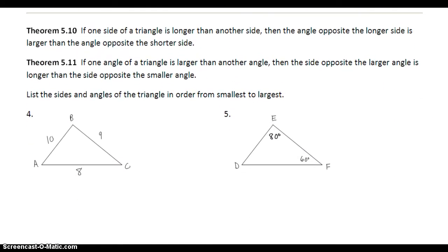The last two theorems deal with how to order the sides and the angles of a triangle. If we look at example number four, it's pretty easy to list the sides in order from smallest to biggest. AC is going to be the smallest followed by BC followed by AB.